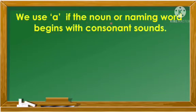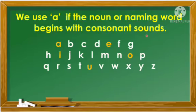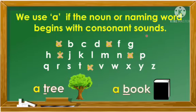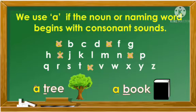Here is the explanation. We use 'a' if the noun or naming word begins with consonant sounds. For example, a tree and a book — T and B are consonants, that's why we use 'a'.